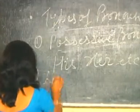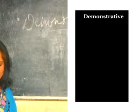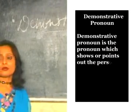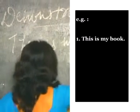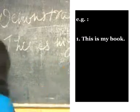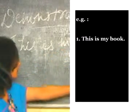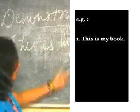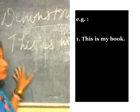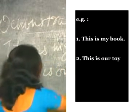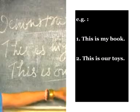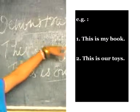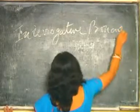The next type is demonstrative pronoun. The demonstrative pronoun is the pronoun which shows or points out persons, things, or animals. For example: 'This is my book' — the sentence indicates that the book lying here is mine. Another example: 'This is our toy' — this shows that the toy lying here is ours. These are examples of demonstrative pronoun.